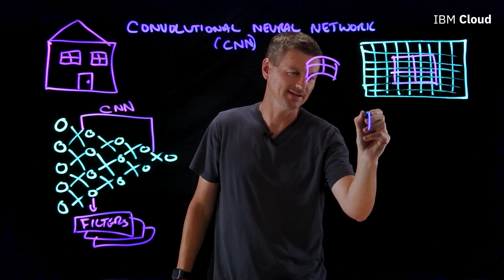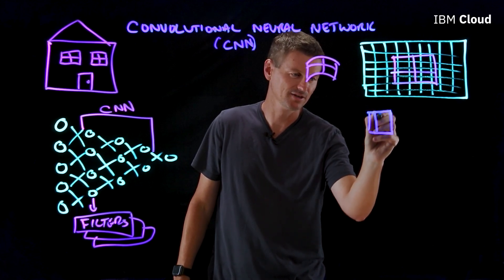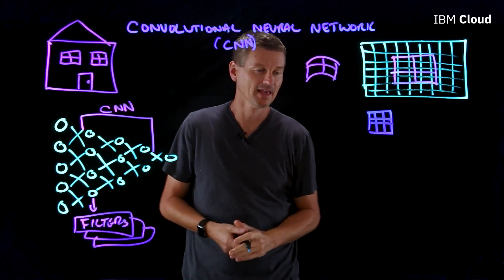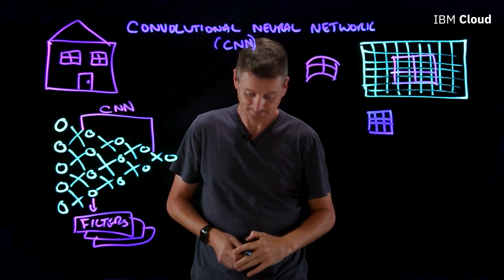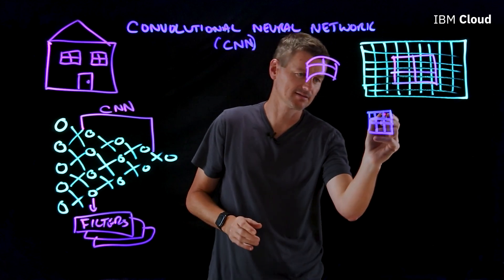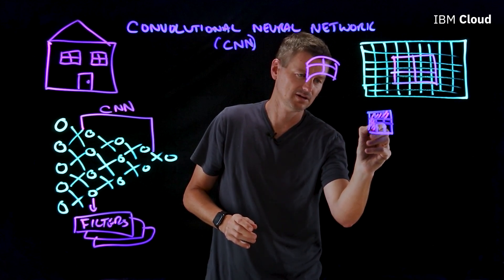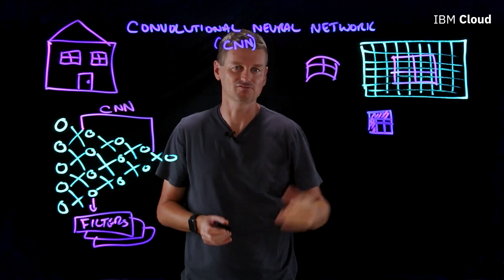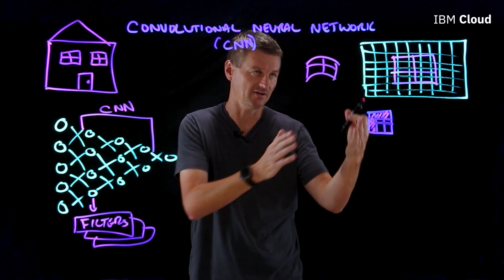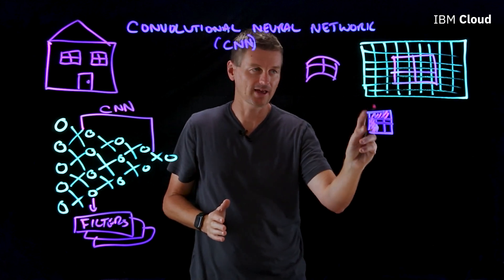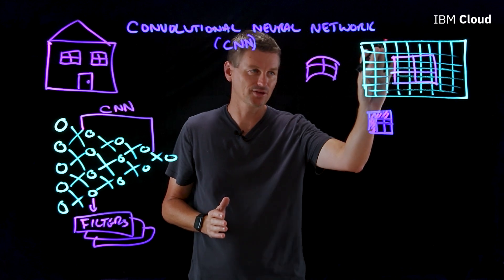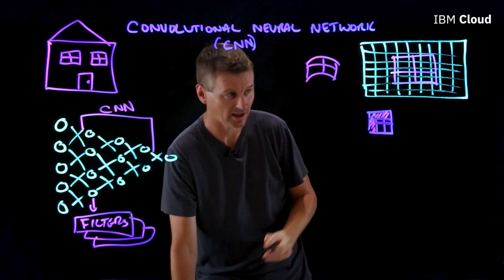Now, a filter is basically just a three by three block. And within that block, we can specify a pattern to look for. So we could say, let's look for a pattern like this, a right angle in our image. So what we do is we take this filter, and it's a three by three block here, we will analyze the equivalent three by three block up here as well.